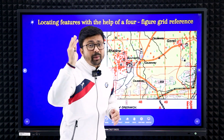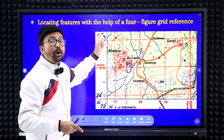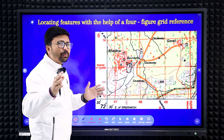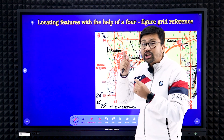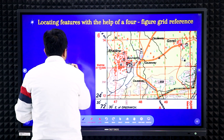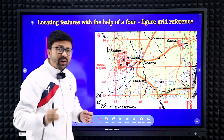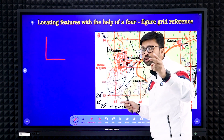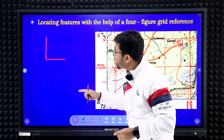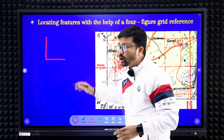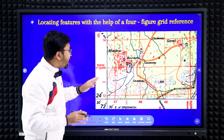The first question from the topographical map is usually to find the four-figure grid reference. How do you find it? Just apply the simple concept of 'L'. When you write the letter L, you make the vertical line first, then the horizontal line. Students get confused about whether to take easting or northing first — the vertical line means easting, so you take easting first, then northing.